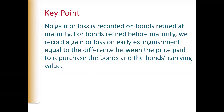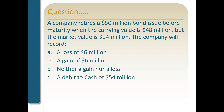No gain or loss is recorded on bonds when they get retired at maturity. But when bonds are retired before maturity, we have to record either a gain or a loss on the early extinguishment of the bonds. That gain or loss is the difference between the price we pay to repurchase the bonds and the bonds' carrying value. For example: a company retires a $50,000,000 bond issue before maturity when the carrying value is $48,000,000, but the market value is $54,000,000. Put your answer in the chat box.